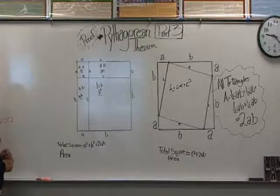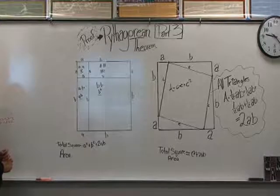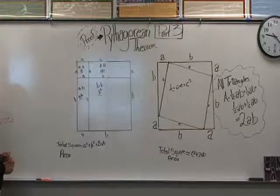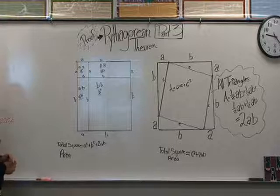This is proving the Pythagorean theorem part three. To prove that both squares are equal, you must set both squares equal to each other in an equation.